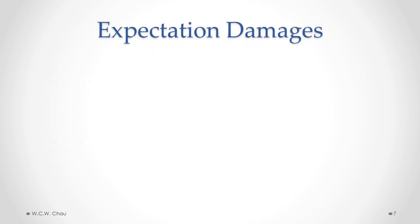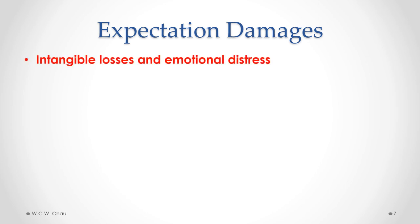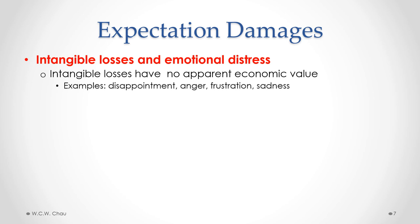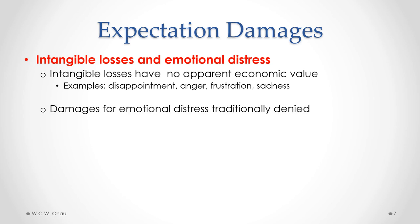Expectation damages is designed to put a plaintiff or innocent party in the same financial position as if the contract had been properly performed, using the equation: expected damages equals expected benefits minus expected costs. This seems to emphasize compensating for monetary or dollar losses. But how do we deal with intangible losses, especially emotional distress that arises from a breach of contract? The legal problem is that intangible losses — such as disappointment, anger, frustration, and sadness — have no apparent economic value and are very difficult to quantify.